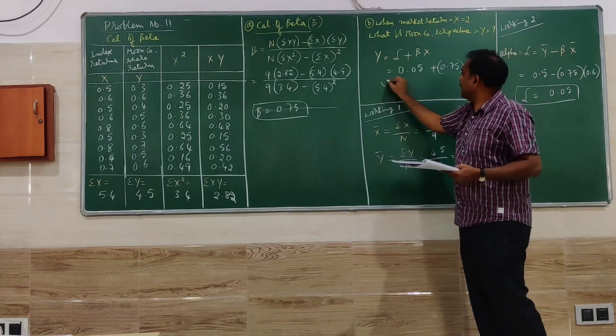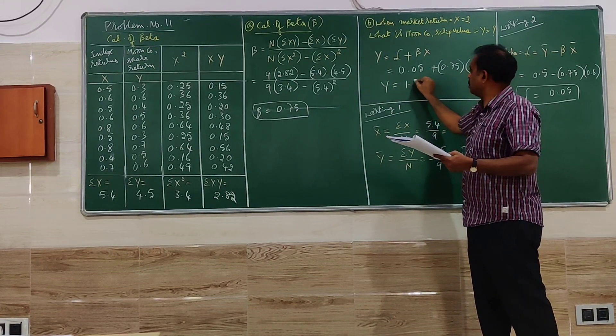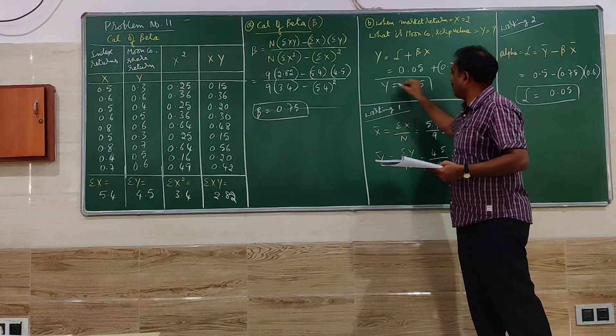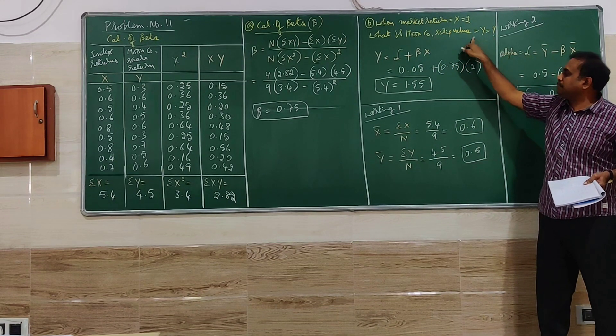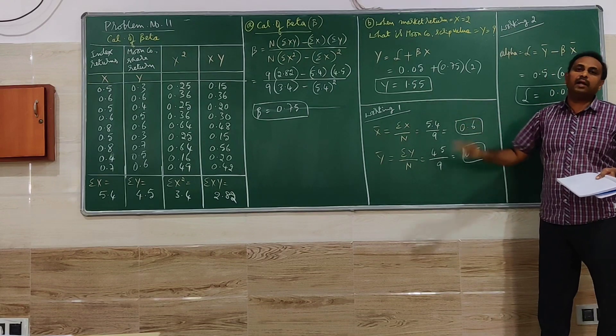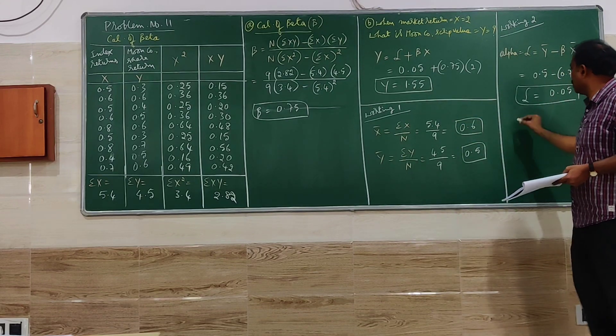When you do simplification here we get Y is equal to 1.55. That means when the market return is 2 the moon script value will be 1.55 returns. We can compute like this.